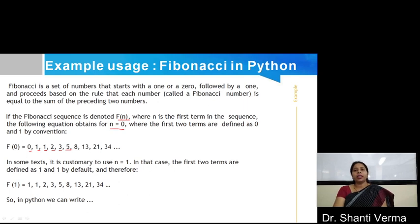In some contexts, it is customary to use n equals 1. In that case, the first two numbers are 1 and 1 by default. And therefore, F(1) is 1, 1, then 2, 1 plus 2 is 3, 3 plus 2 is 5 and so on.